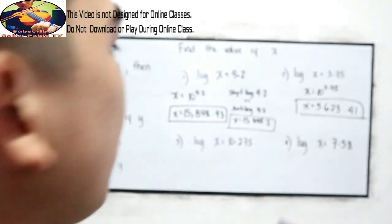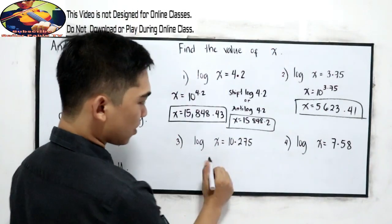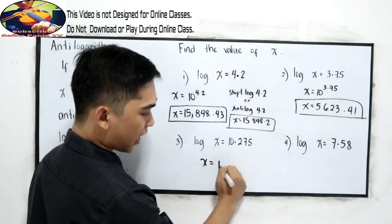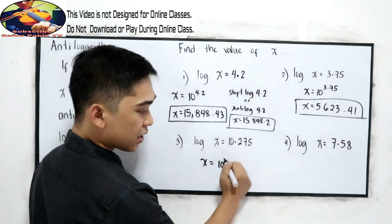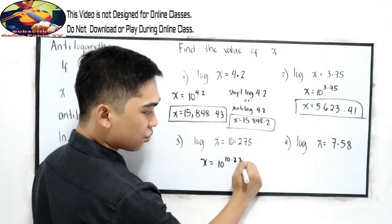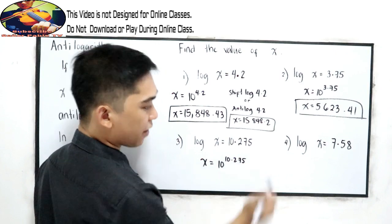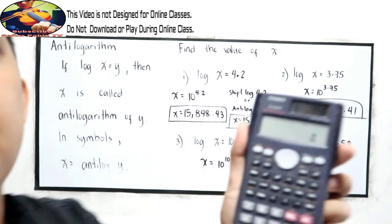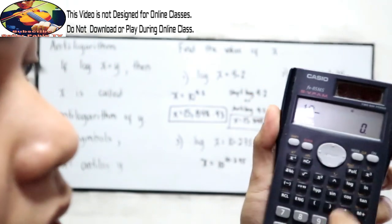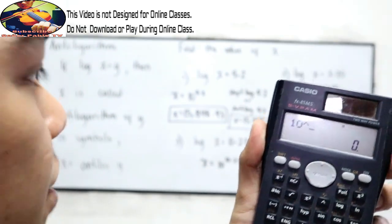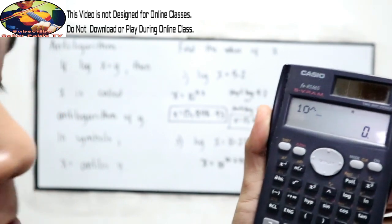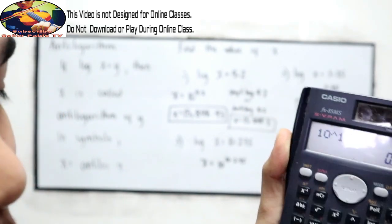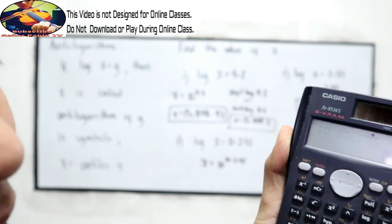Next, number 3. This is x is equal to 10 raised to 10.275. So compute 10 raised to 10.275.